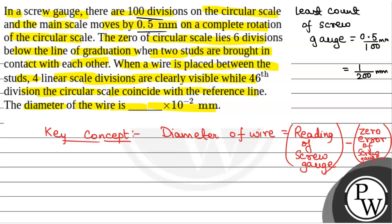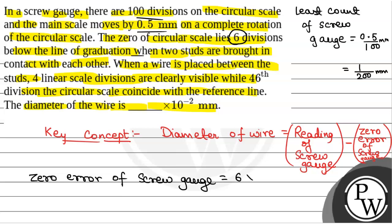Now we will calculate the zero error of the screw gauge. The zero of the circular scale lies 6 divisions below the line of graduation. So, zero error = 6 × least count = 6 × (1/200) = 6/200 = 3/100 = 0.03 mm. This will be the zero error of the screw gauge.